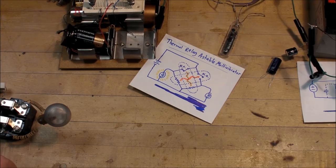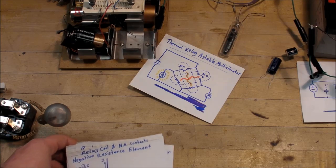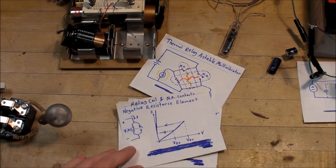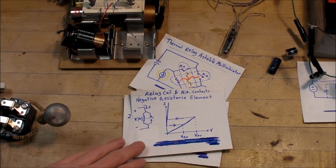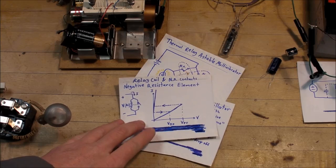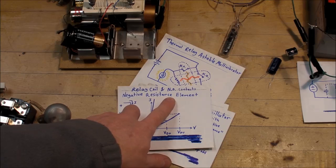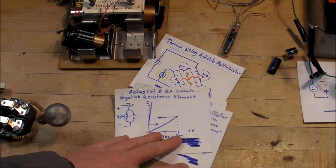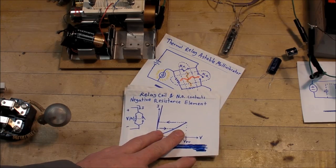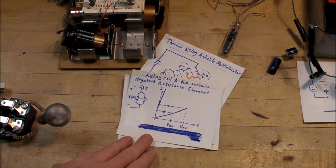So one way that I found to get a nice control or somewhat controllable frequency and somewhat controllable duty cycle is to hook up a relay in such a way that it has negative resistance. I had never really realized this before until recently when I was fooling around with these relay circuits.